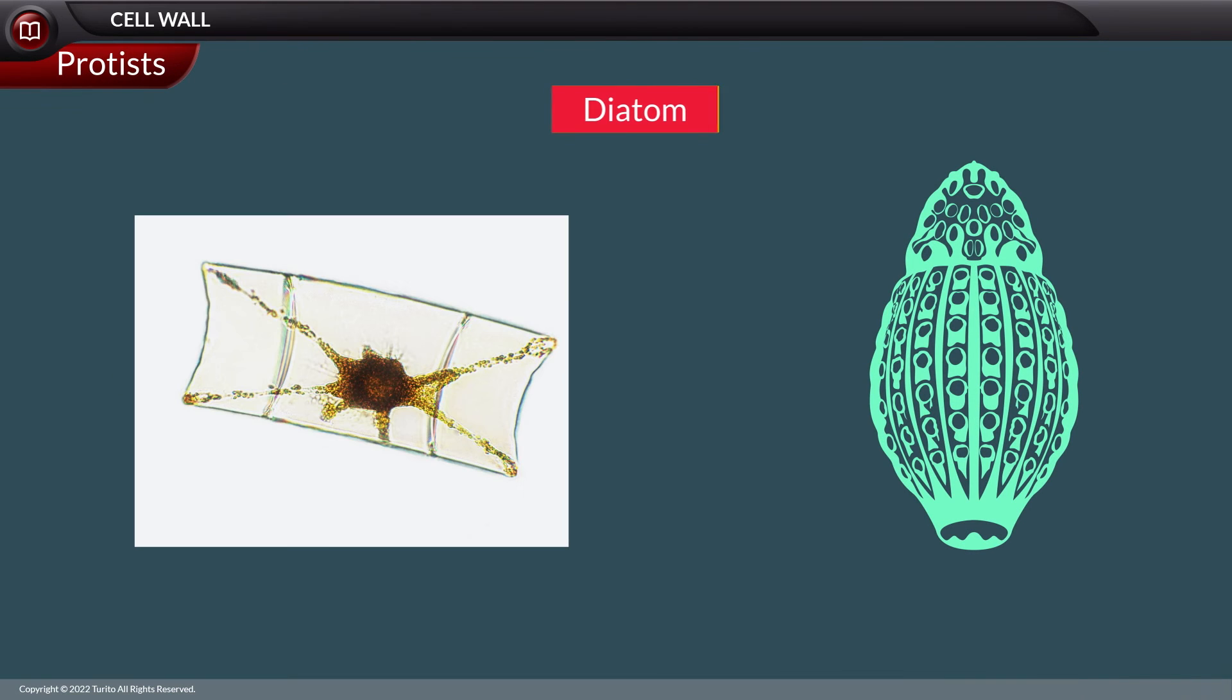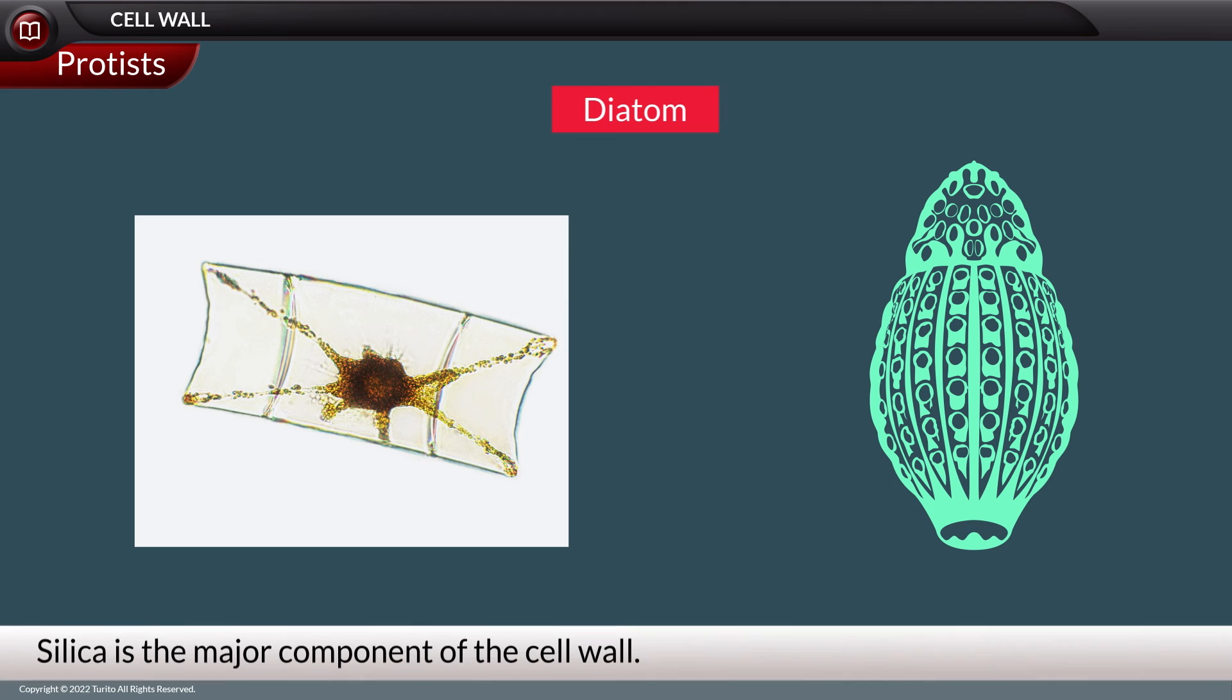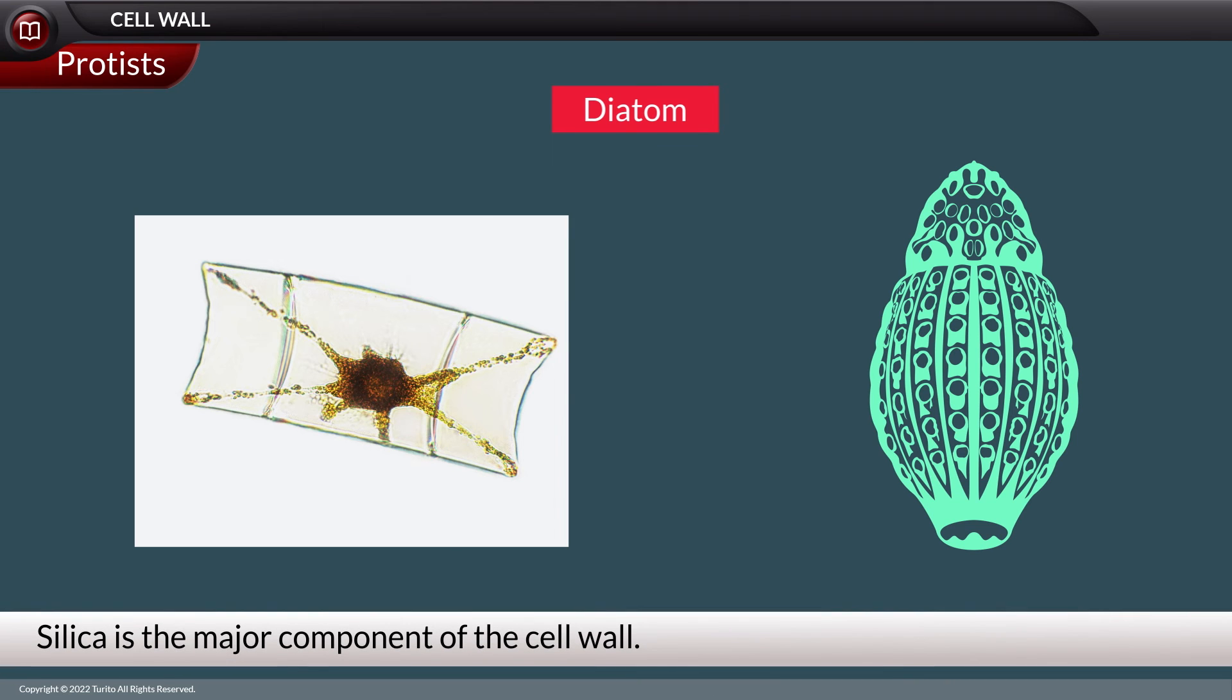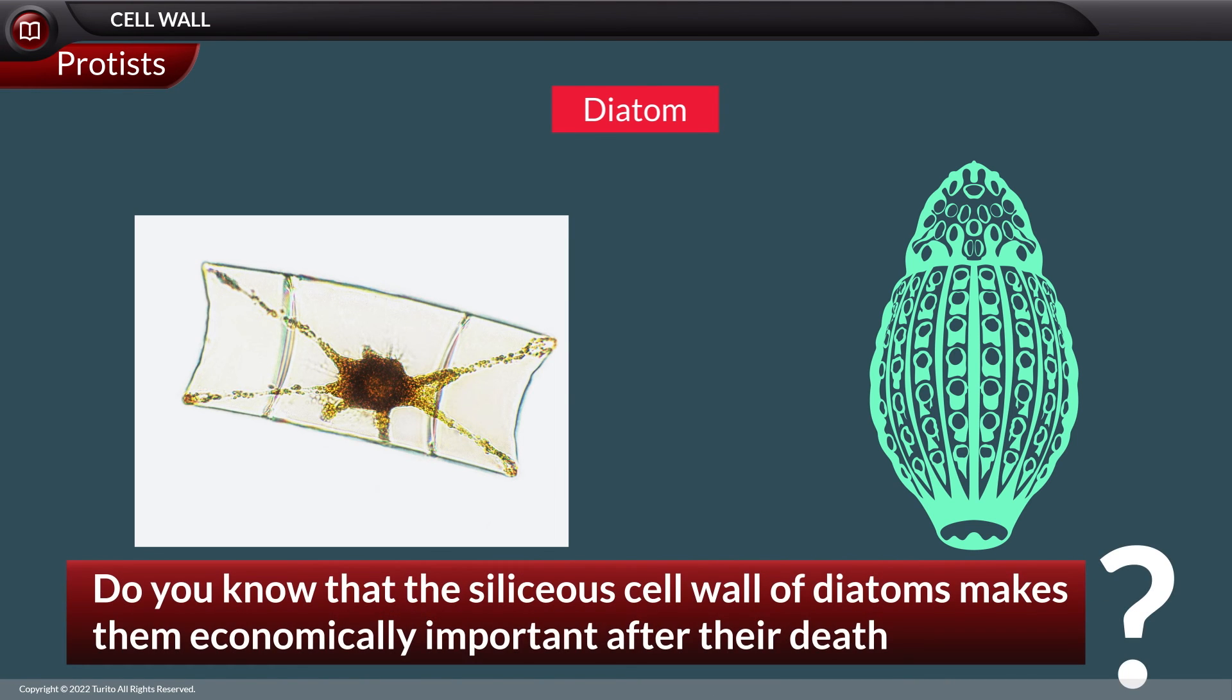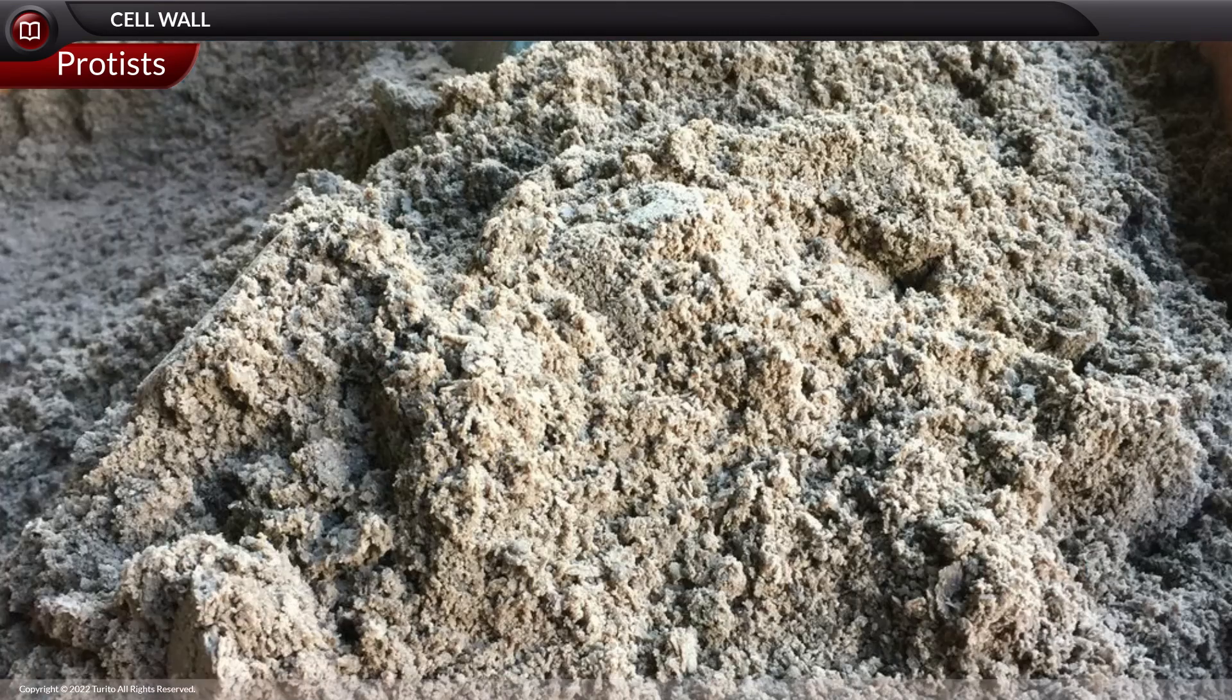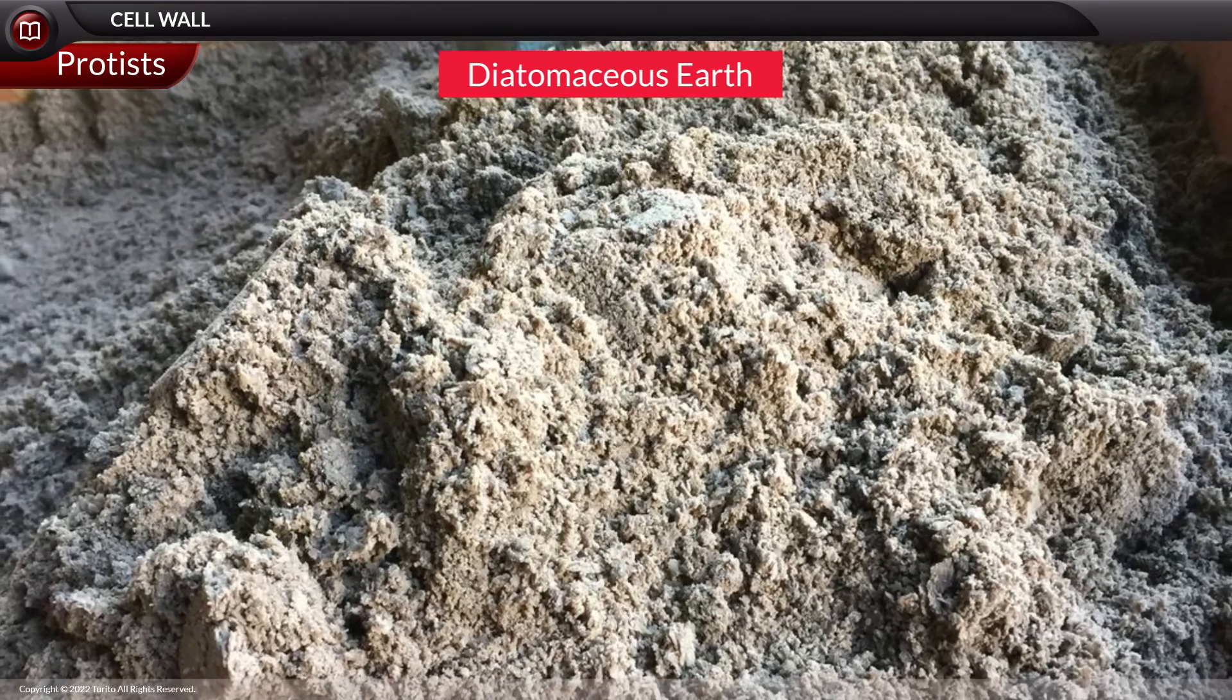Talking about protists, organisms like diatoms have silica as a major component in their cell wall. Do you know that the silicious cell wall of diatoms makes them economically important after their death? The material is called diatomaceous earth.